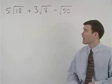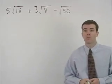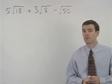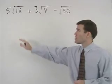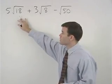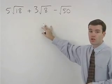In order to add these radical terms together, we must have what are called like radicands. In other words, the number inside the radical, which is called the radicand, must be the same for the different terms.